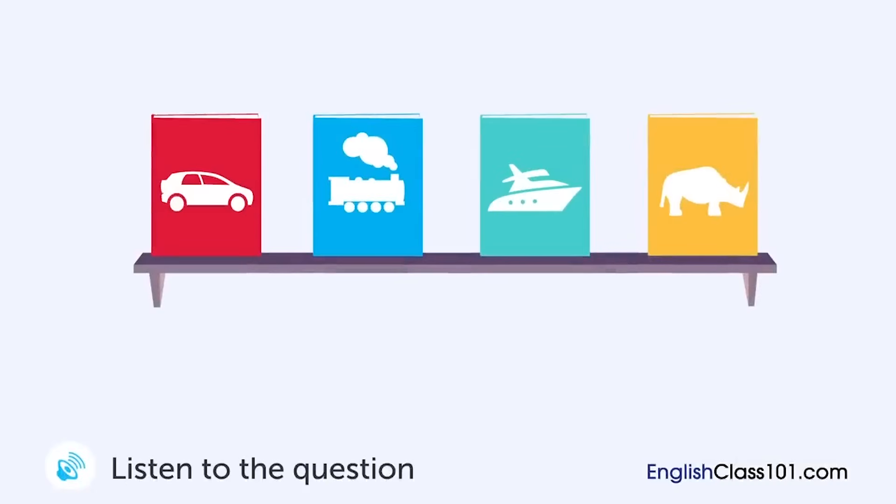A woman is asking a store clerk something at a bookstore. Which book does the woman want to see? — 'Excuse me, I'd like to take a look at a book on that shelf.' 'Which book would you like?' 'The one about cars.' 'One moment, please.' 'This one?' 'Yep, that's right.' 'Here you go.'